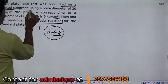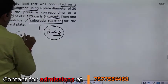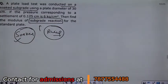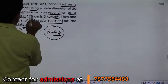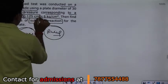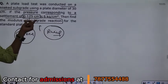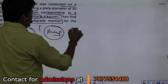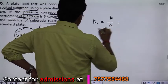If you are given the soaked subgrade, and if the pressure corresponding to the settlement of 0.125 cm is given. During the plate load test, the settlement of the plate is 0.125 cm. The pressure is given to you. So, straight to the subgrade definition, k is equal to p divided by delta.